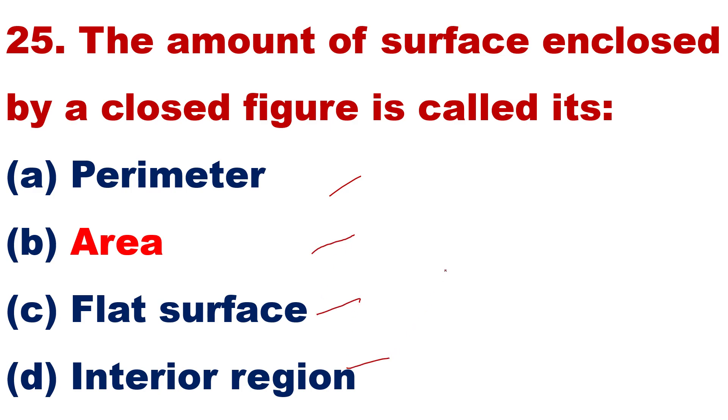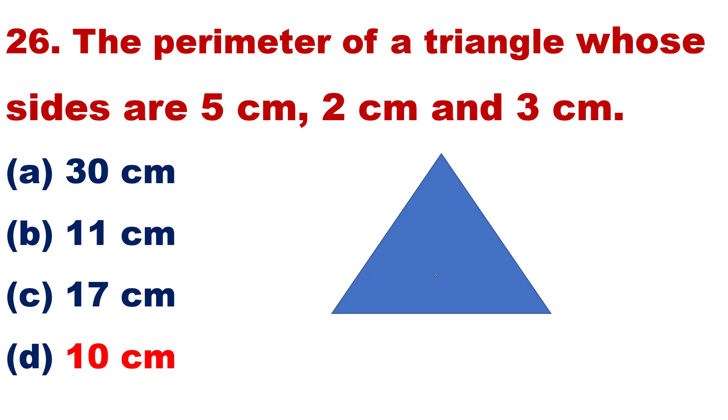Question number 26: The perimeter of a triangle whose sides are 5 cm, 2 cm and 3 cm. Only perimeter. Maybe this answer correct, but you have to write the correct answer.